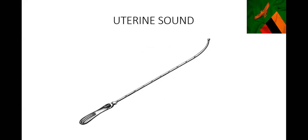This is a uterine sound. The only thing you need to know to identify it is that it has graduations - numbers on it. If you see any similar instrument without these numbers, then it's not a uterine sound - maybe it's a bladder sound. A bladder sound looks similar but doesn't have graduations. We use the uterine sound to measure the length and size of the uterus, and also to feel what's inside the uterus - for example, when you have a missing IUCD. Notice it's blunt at the top so you can't perforate the uterus.